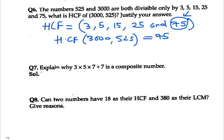Now question number 7, it says explain why 3×5×7+7 is a composite number. You must know what a composite number is. A composite number is a number which has more than 2 factors, unlike prime numbers which have only factors like 1 and the number itself.